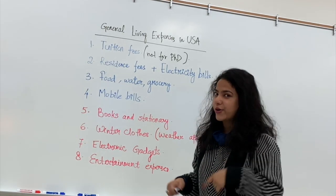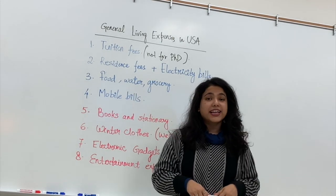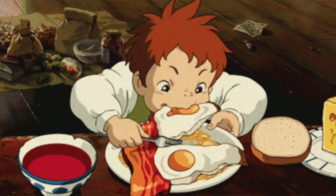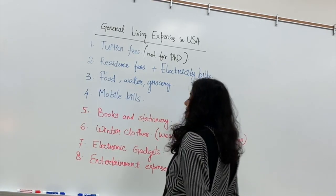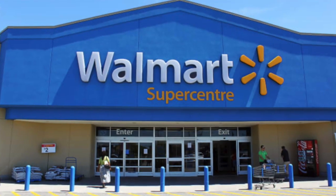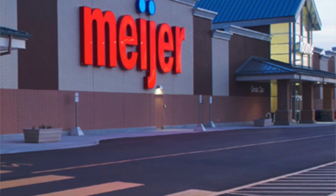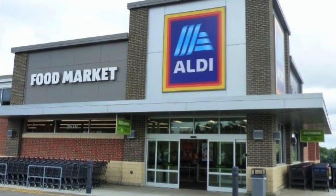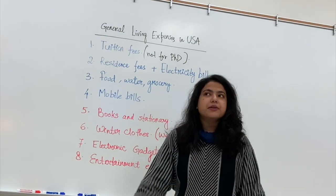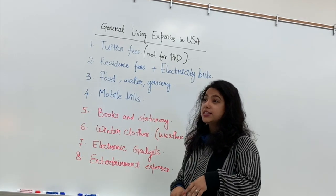The third important point is food, water, and groceries. I do a weekly shopping run to places like Walmart, Meijer, and Aldi — there are lots of options. I think Walmart and Aldi are good choices. Water is also a big concern in the United States because most places have water quality that is not optimal for direct human consumption.